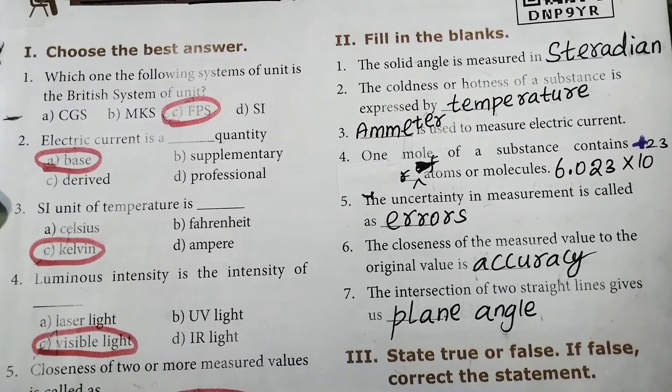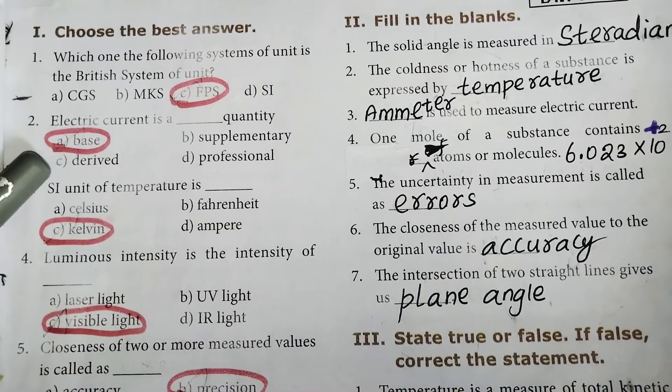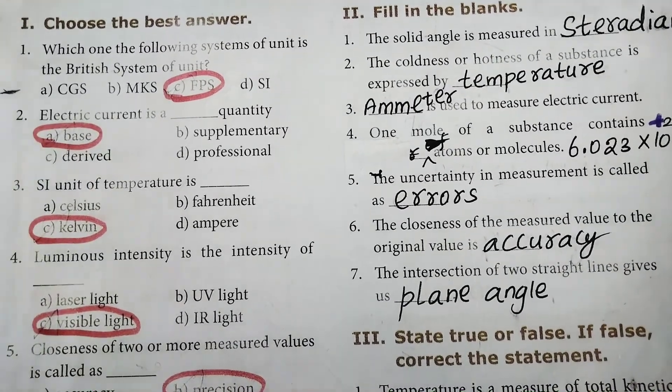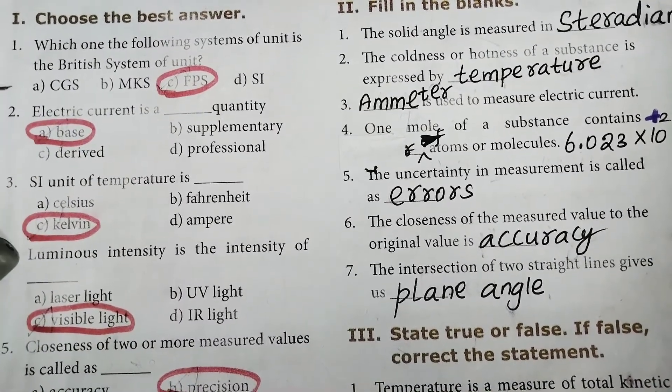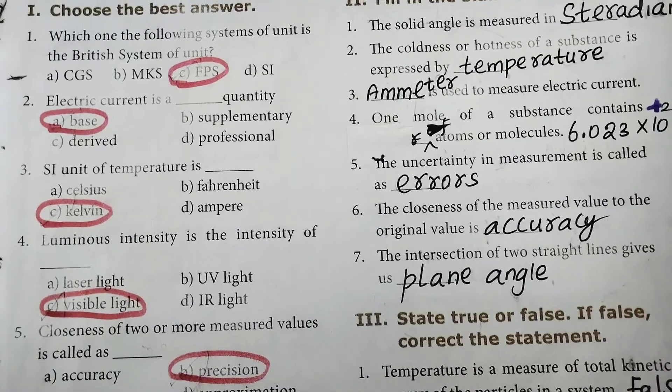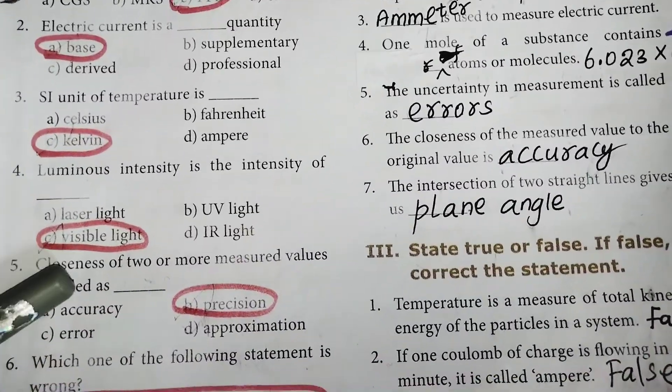Second one, electric current is a dash quantity. A, base. Third one, SI unit of temperature is C, Kelvin. Fourth one, luminous intensity is the intensity of C, visible light.